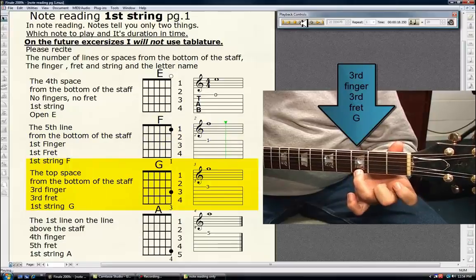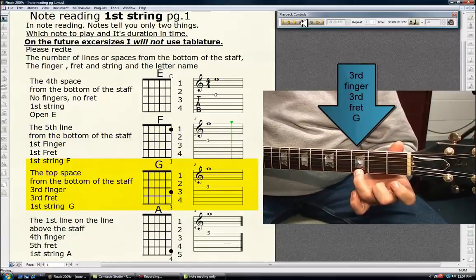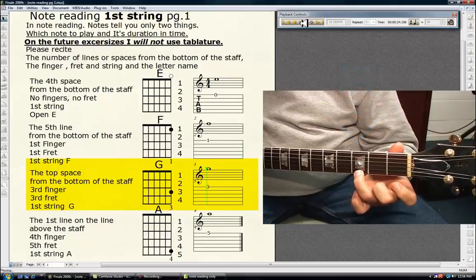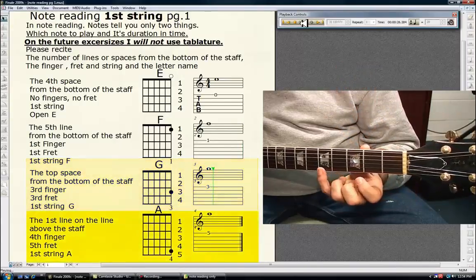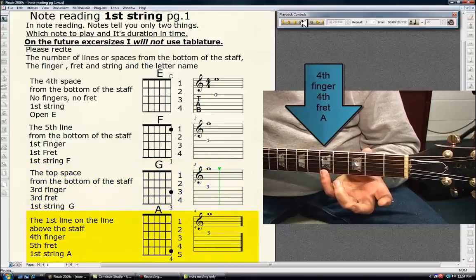of the staff is the third finger, third fret, first string G. The first line on the line above the